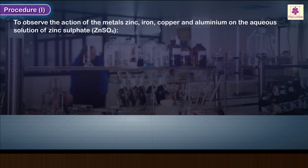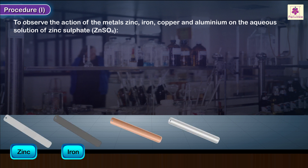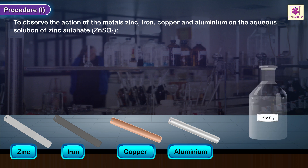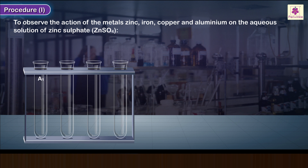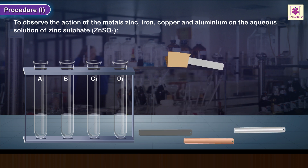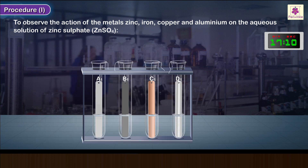Procedure 1: To observe the action of the metals zinc, iron, copper, and aluminum on the aqueous solution of zinc sulfate. Take 4 clean test tubes and label them A1, B1, C1, and D1 respectively. Take about 3 to 5 ml of aqueous solution of zinc sulfate in each test tube and place them in a test tube stand. Using fine sandpaper, polish each strip of the four given metals until they shine with a metallic luster. Tie a piece of thread and leave the arrangement undisturbed for about 30 minutes.